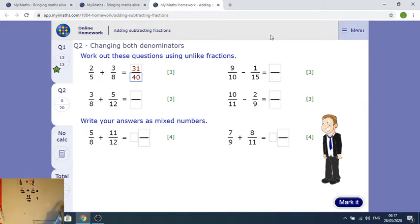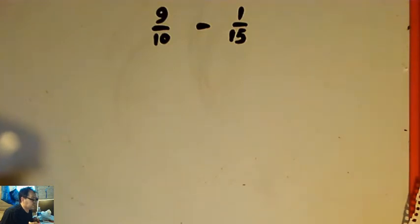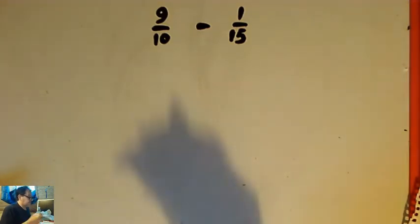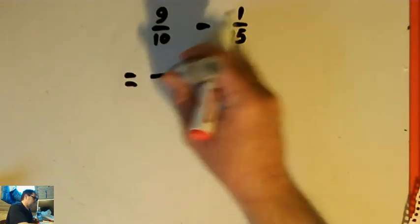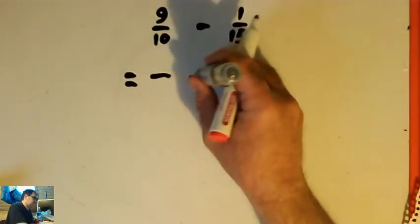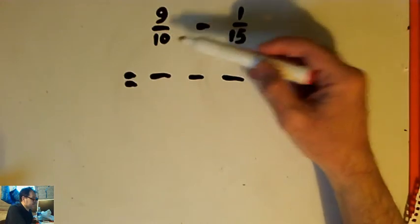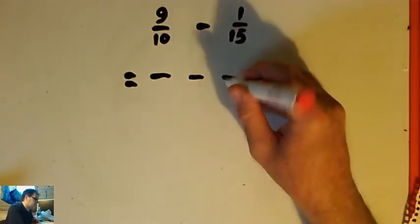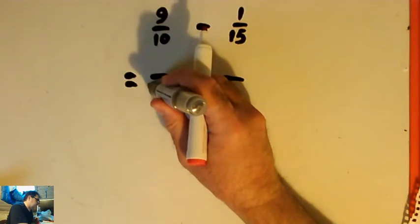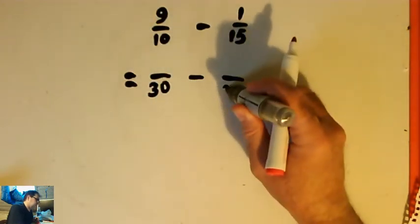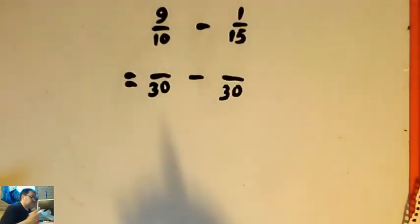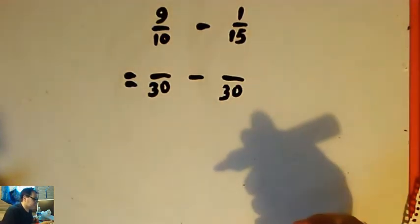The second question is 9 tenths minus 1 fifteenth. I want both fractions to have the same denominator, so I need something that both 10 and 15 go into. I spot straight away that they both go into 30, so I can write both as fractions out of 30.